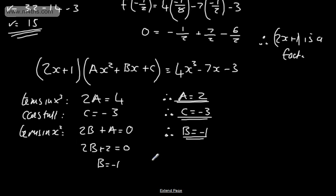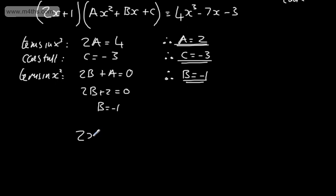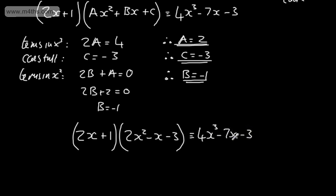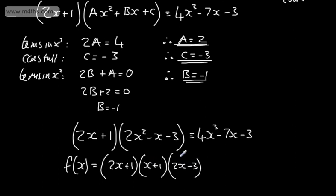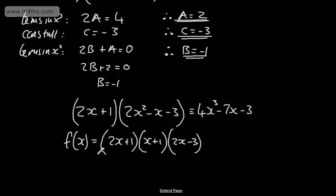So what I can now state is I can state that 2x plus 1 multiplied by 2x squared minus x minus 3 will equal 4x cubed minus 7x minus 3. I'm going to see if I can factor this quadratic factor into the product of two linear factors. And it looks like I can. So I'm going to write f(x) equals the quantity 2x plus 1. Just looking if I can factor this, that looks to be x plus 1 multiplied by 2x minus 3. That will give us exactly what we want. So that now is f(x) expressed as a product of three linear factors.